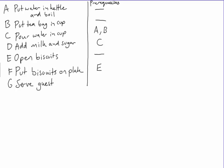Putting the biscuits on a plate, that would rely on me opening the packet first. And then serving the guest, I need to have everything else done to do that. So I need to have D, which was adding the milk and sugar to the tea, and E, putting the biscuits on the plate. So that's a precedence table, which shows what different parts of this procedure rely on previous parts.